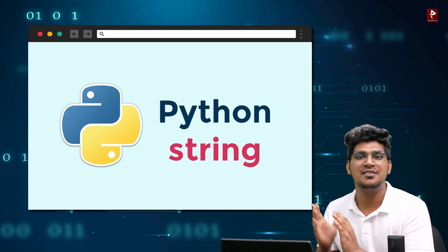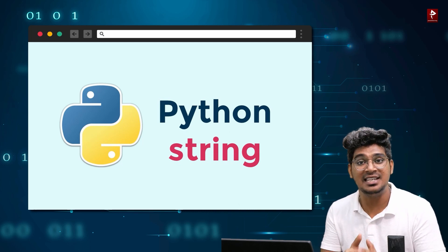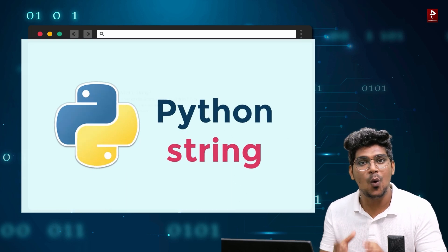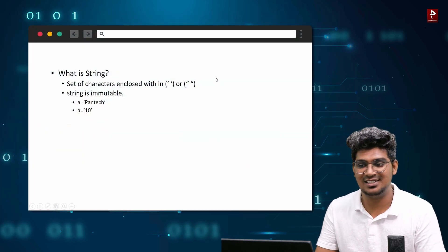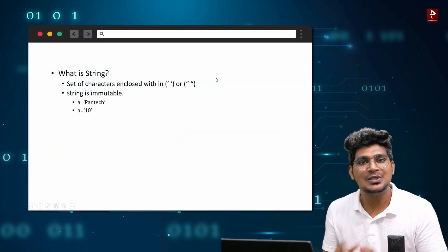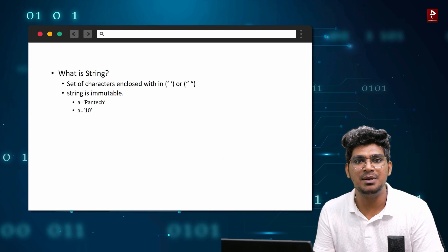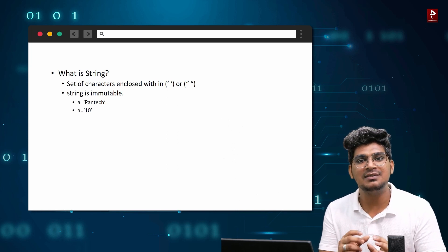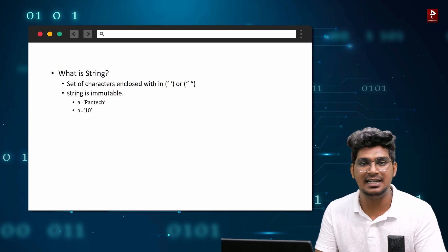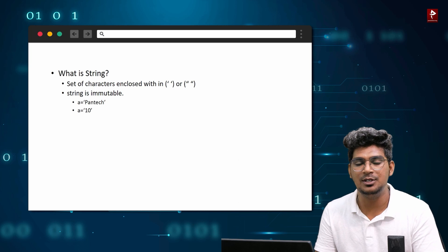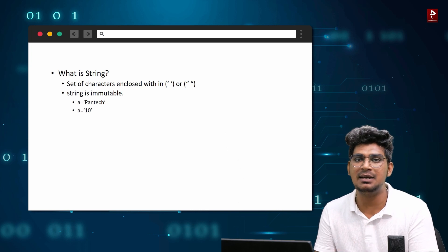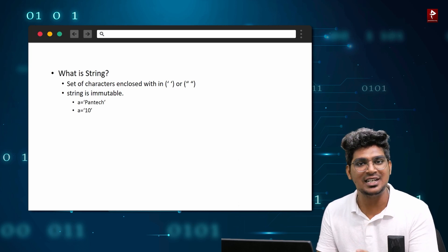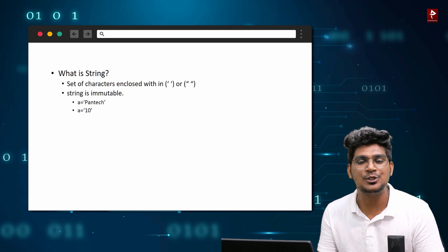So, what are strings? Strings is one of the data types. Specifically, it is a sequence data type. Sequence data type has three types: list, string, and tuple.